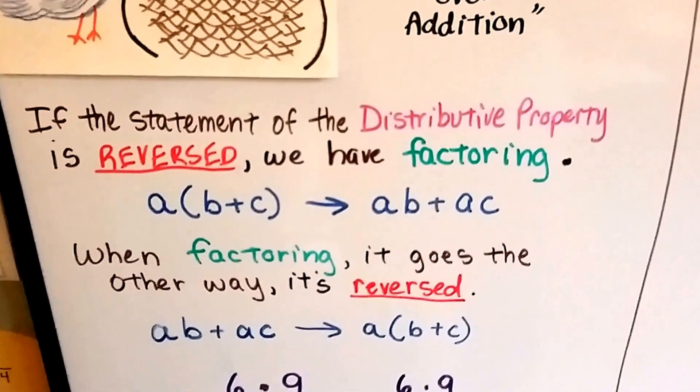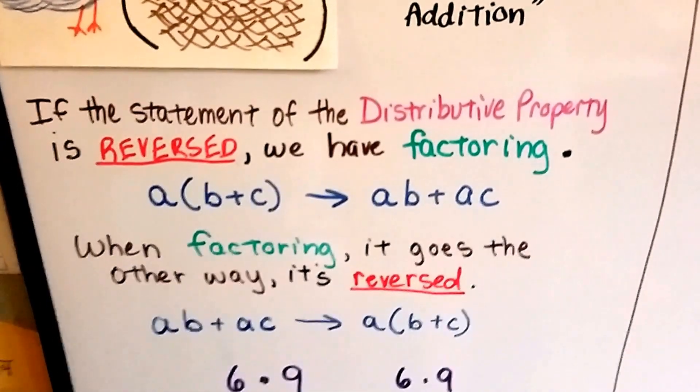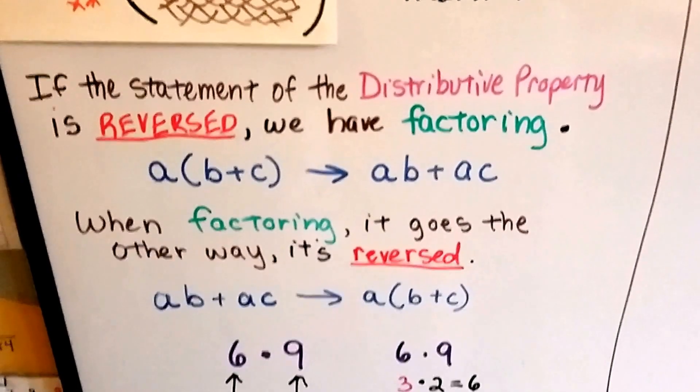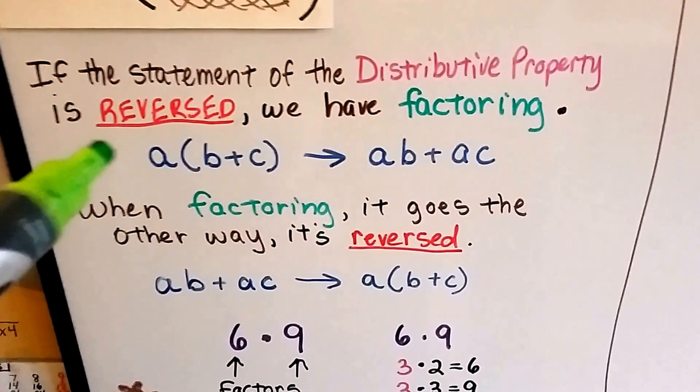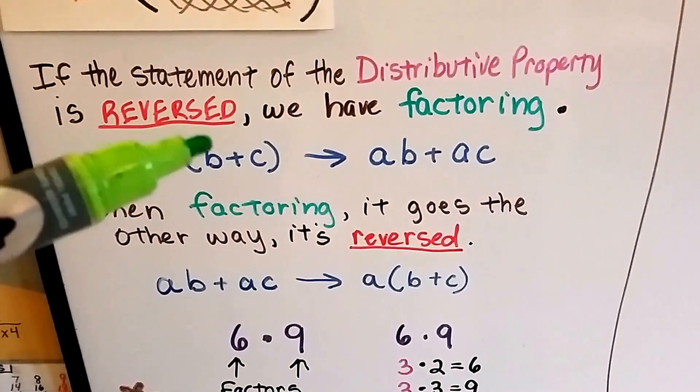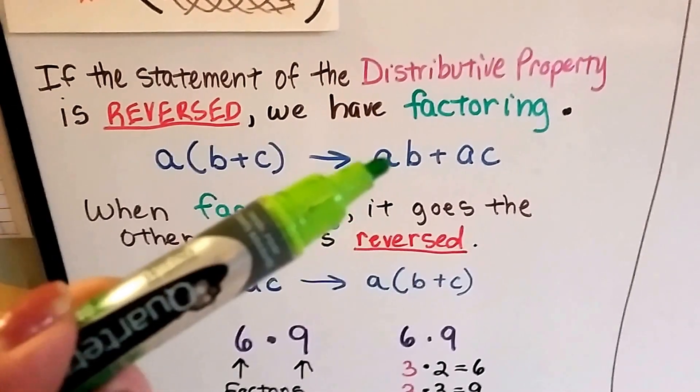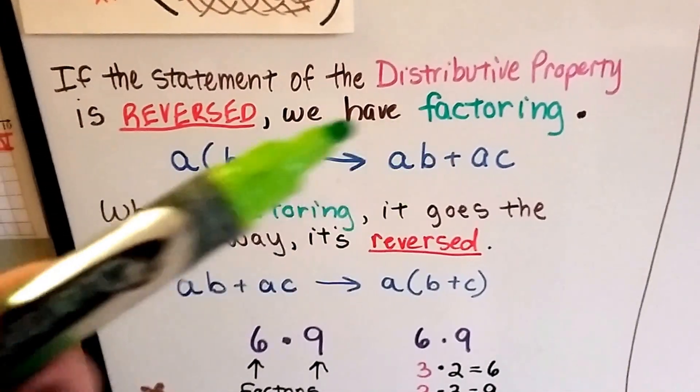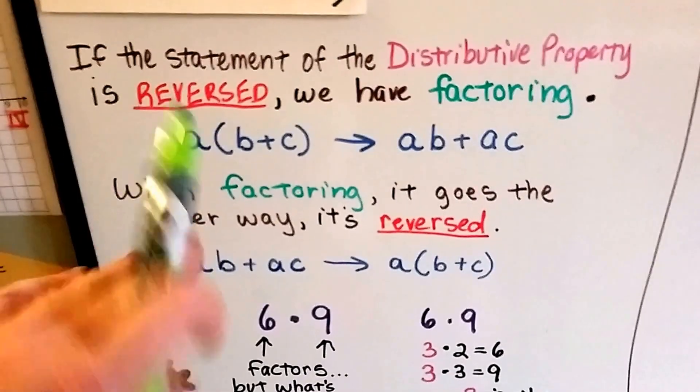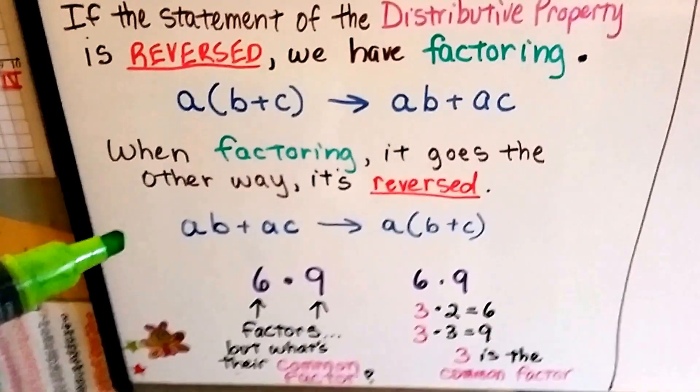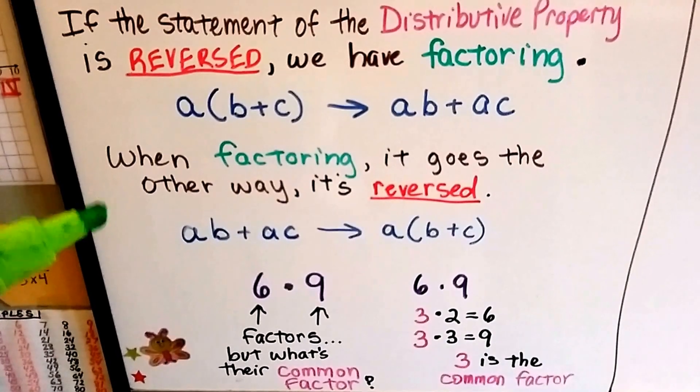Well, if the statement of the distributive property is reversed, we have factoring. That's how to factor. So in distributive property, we took the a times b plus a times c and came up with this for our answer. Well, in factoring, we start with this one and get this one. We flip it around. When factoring, it goes the other way. It's reversed.